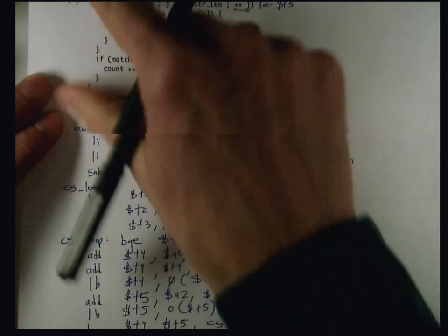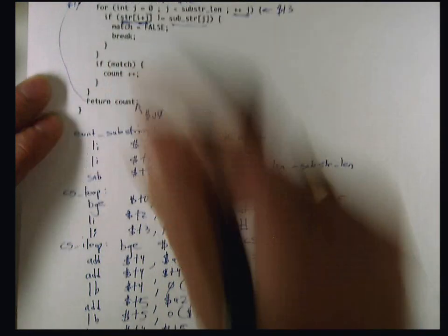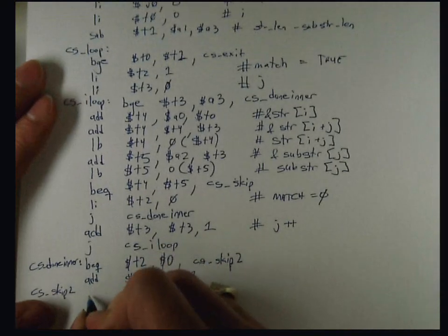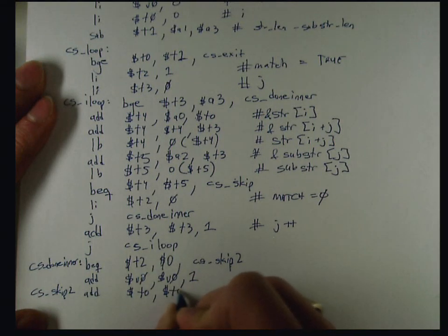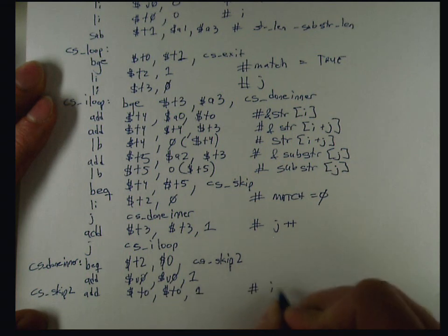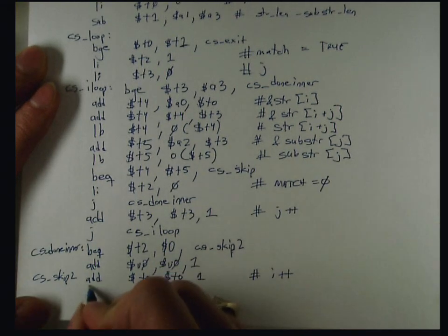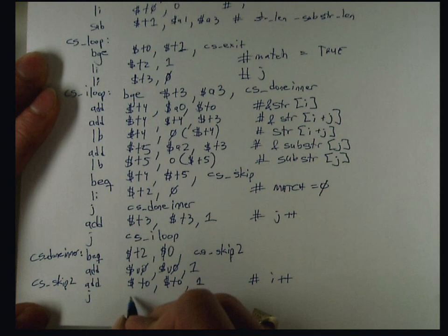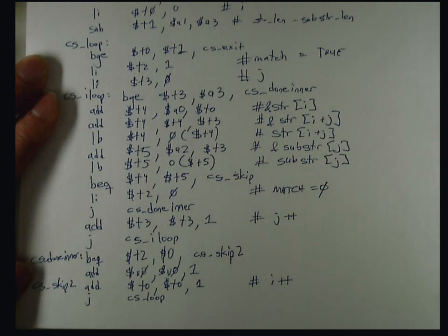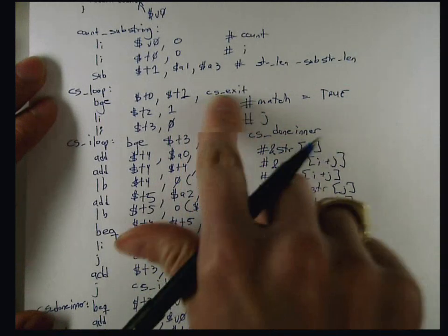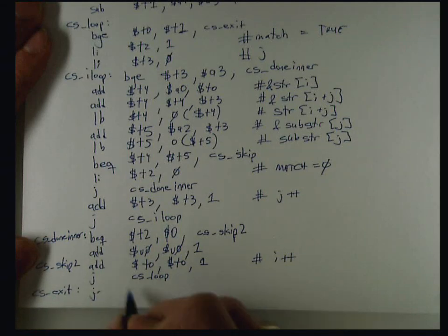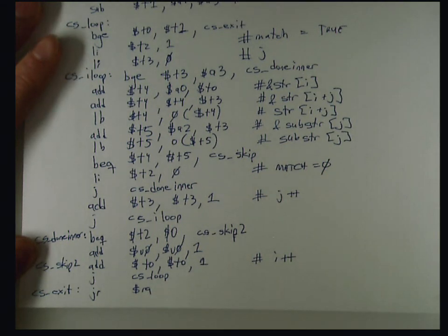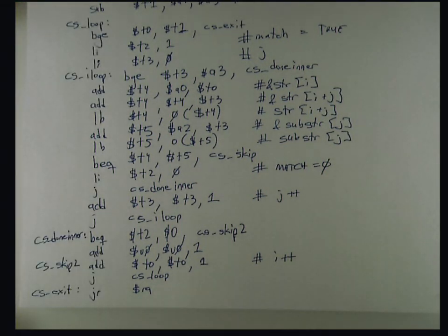CS skip two, and now we're at the end of the outer loop. We have to do the I plus plus and then go around for another iteration of the inner loop, so the I plus plus is adding to T0, adding one to T0, which is I, doing another iteration of the loop, which means jumping back to CS loop, and that's the end of the loop. All that's left is this return condition, and so that's when we exit the outer loop, so I need that CS exit label, but other than that, we're done. We can just do a jump register RA.